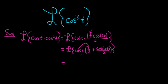Now you can distribute the cosine t. So you would get 1 half, you can pull it out, Laplace cosine t. Likewise, distribute the cosine t here. So you get plus, again, pull out the constant, 1 half Laplace cosine t cosine 2t.